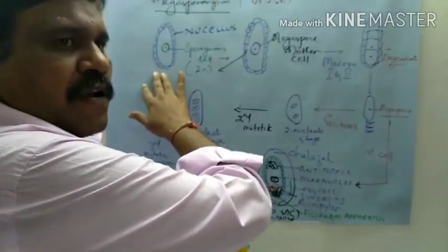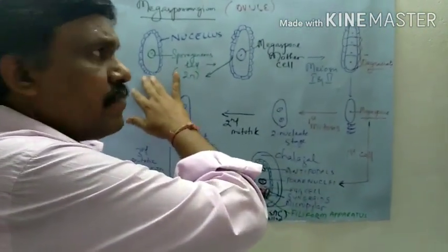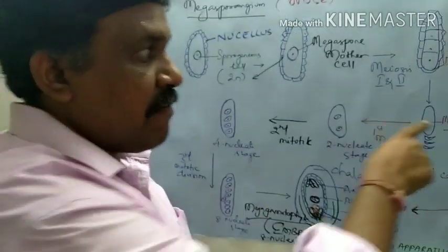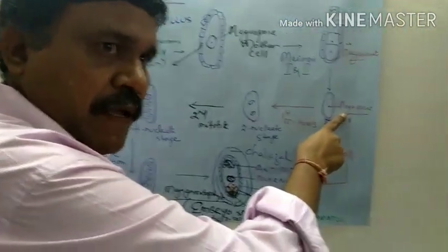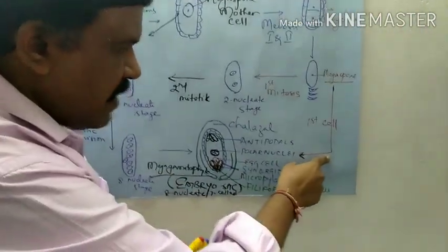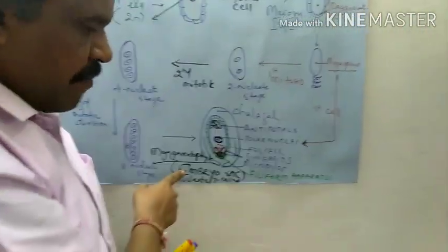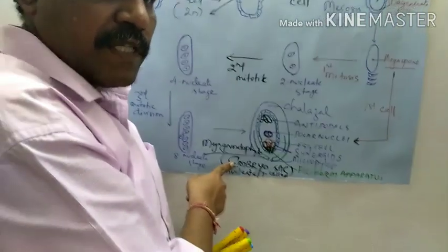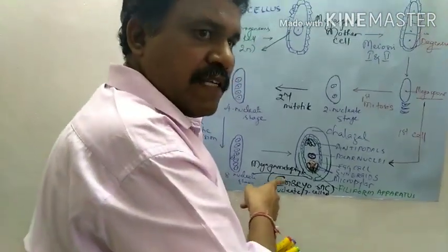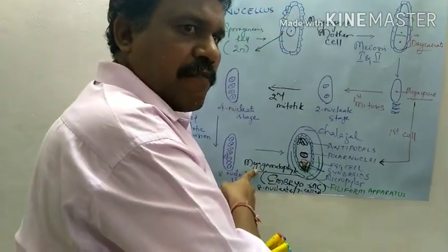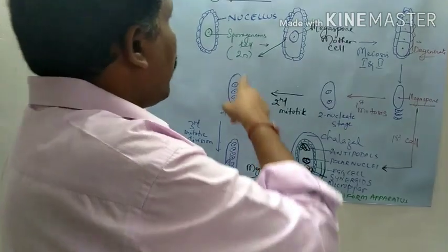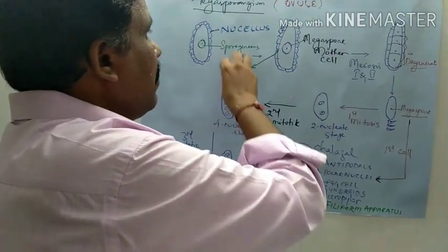Let us recapitulate what we studied today. We started with Megasporangium, and Megasporangium is the one which develops the Megaspore. And Megaspore is the first cell for forming the embryo sac. The embryo sac is otherwise called as Megagametophyte or Female Gametophyte. What are the events here?